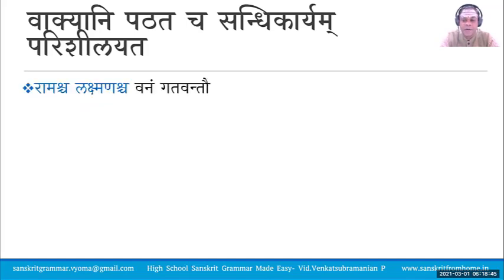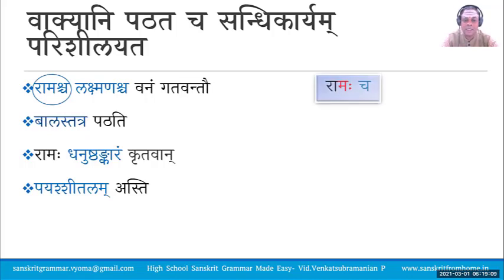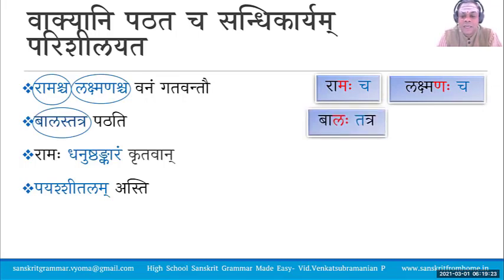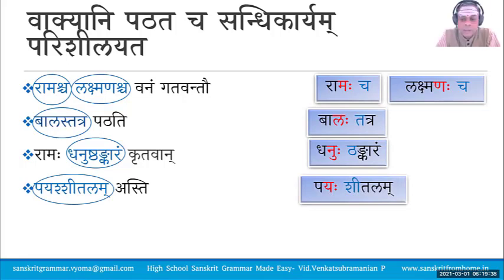Let us read some sentences: Ramascha Lakshmanaścha Vanangatavantau; Balas Tatra Paththati; Ramaha Dhanushthankaran Kritavahan; Payashitalam asti. These come from Ramahacha Lakshmanahacha, Balaha Tatra, Dhanuhu Thankaram, and Payahashitalam respectively. In all these cases we see that Sakara has come — in the first, third, and last cases the Sakara has come but it has also been further transformed.